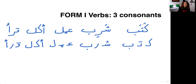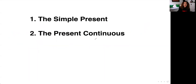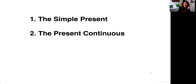As I was saying, there are two kinds of present tense: the simple present and the present continuous. This is very important for Levantine Arabic. However, for Fusha it doesn't matter — there's only one form. The simple present and the present continuous are conjugated in the same way in Fusha; there is no difference.